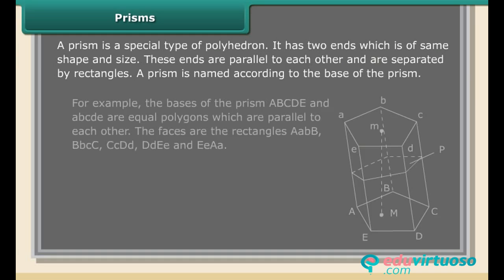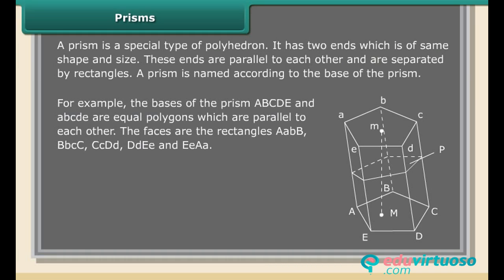For example, the bases of the prism ABCDE and abcde are equal polygons which are parallel to each other. The faces are the rectangles AaBb, BbCc, CcDd, DdEe, and EeAa. Aa, Bb, Cc, Dd, and Ee are called lateral edges.